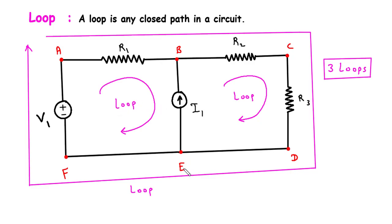Then B, C, D, E, B — this is also a closed path, so this is also a loop. Then A, B, C, D, E, F, A — this is also a closed path, so this is also a loop. So in this circuit there are total 3 loops.